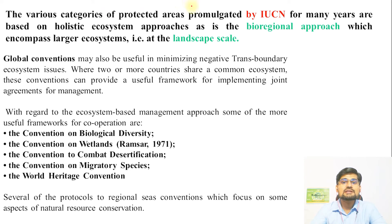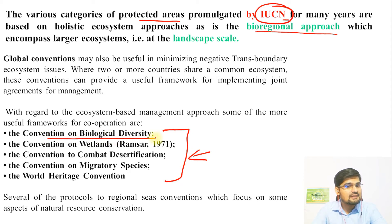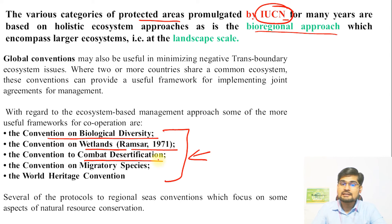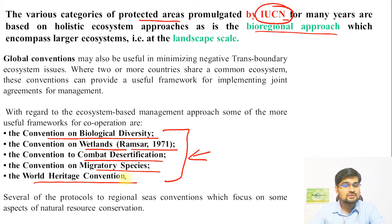Let's look at protected areas and the conservation approach promulgated by IUCN — the International Union for Conservation of Nature — which promotes a holistic bioregional ecosystem approach. Several global conventions address landscape-scale management, including the Convention on Biological Diversity, the Convention on Wetlands (Ramsar sites), the Convention on Combating Desertification, the Convention on Migratory Species, and the World Heritage Convention. These international conventions raise awareness and lead to better management, dissemination of information, and action plans that governments incorporate into their policies.